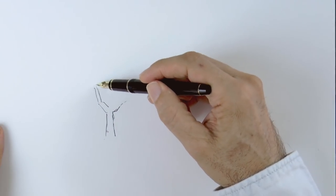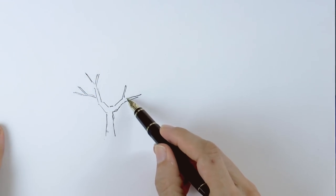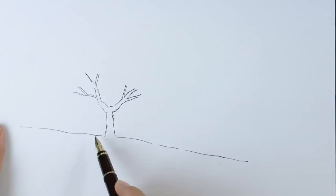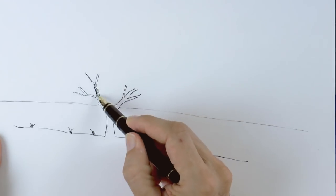Remember that the branches of trees generally are not curving, they look better if you do short straight lines. We draw the land, some plants and we start shading.